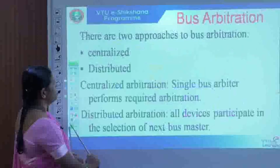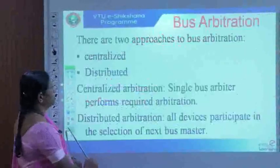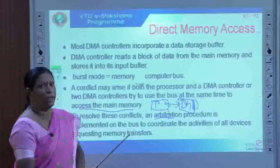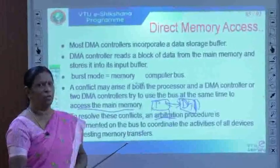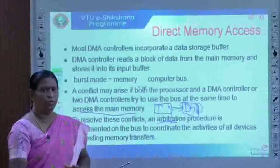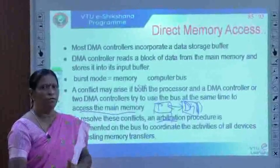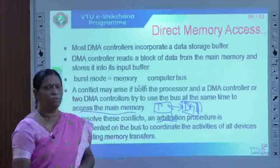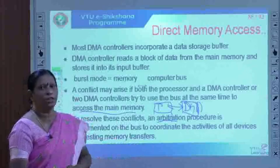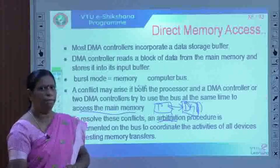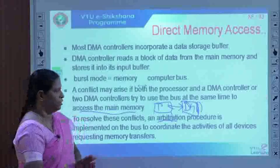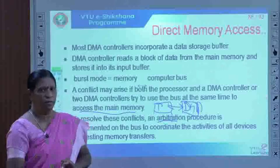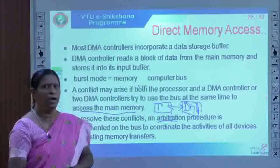In summary, this session covered direct memory access — the concept that large blocks of data can be transferred between IO devices and memory without intervention of the processor. We studied the DMA controller's operation and registers. We also studied two important bus arbitration mechanisms related to DMA: centralized arbitration and distributed arbitration, which determine how bus mastership is decided and transferred.